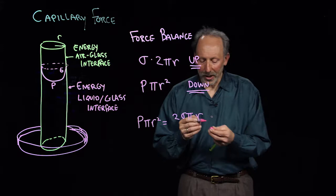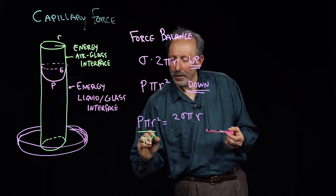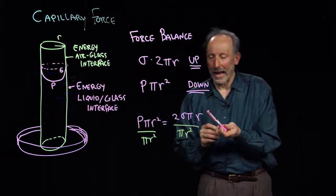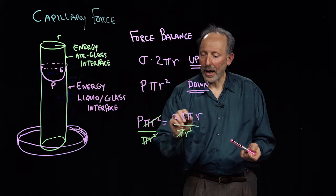And now what am I going to do? I'm going to divide both sides by πr². So I can get rid of that on this side, so those cancel out exactly.